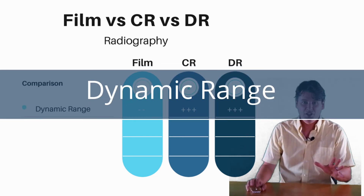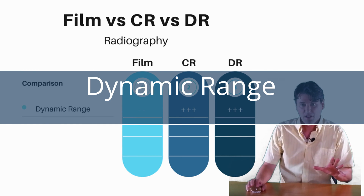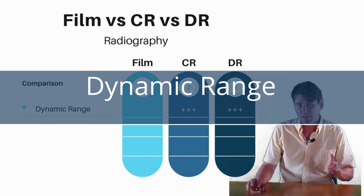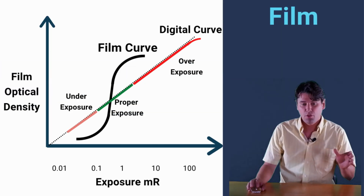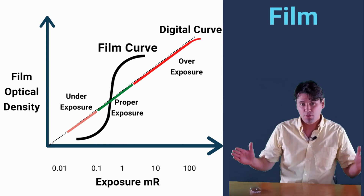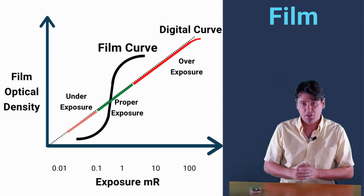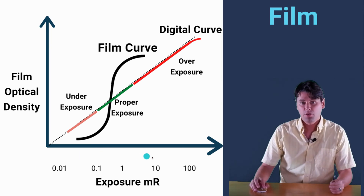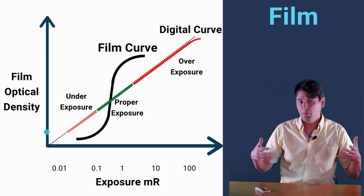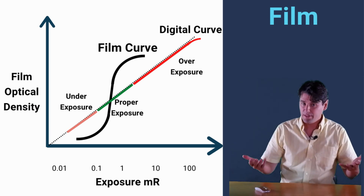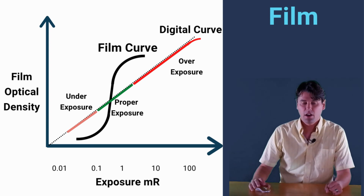One of the big advantages is dynamic range. We have a video where we described dynamic range before, but it's basically the ability to make a good image even over a wide range of radiation dose exposures. On this axis we're plotting the radiation dose that the image receptor sees, and on this axis we're plotting the film optical density or the digital number in the CR/DR system.